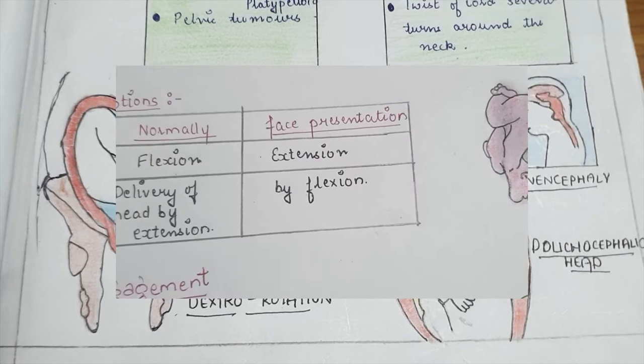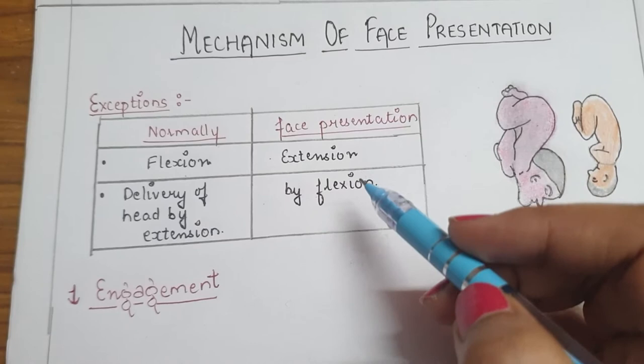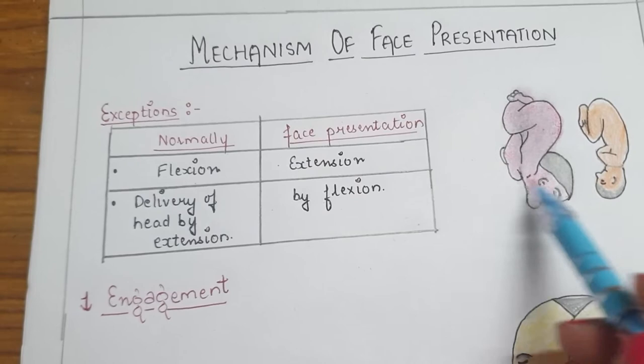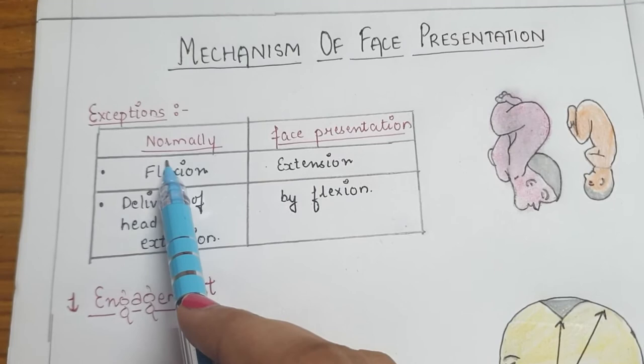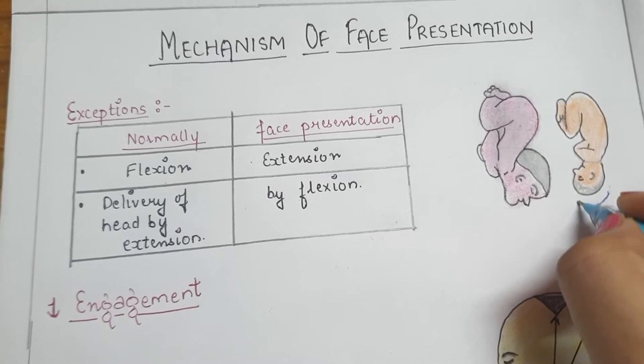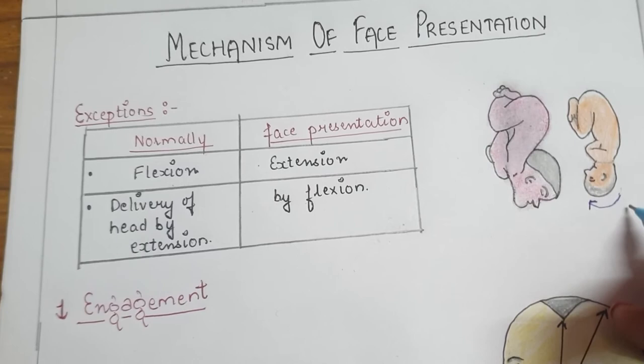The main steps or movements in face presentation are the same as vertex presentation with the occiput anterior position, except for a few things. Normally engagement occurs with flexion, where the occiput approaches the pelvic floor first as it is the presenting part or denominator.